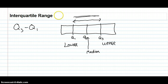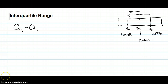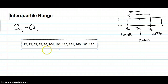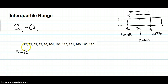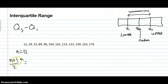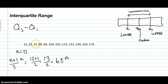Q3 minus Q1 gives us the range of the middle two quarters of the data, which are often the most important. Let's look at an example. The first thing is to count the scores — we find n equals 12, and they're already in order. To find the median we use the equation (n+1)/2, which gives us the 6.5th score — that puts us between the 6th and 7th scores, between 104 and 101. That's where Q2 is.